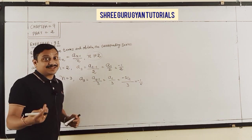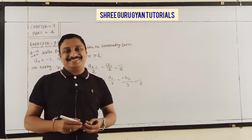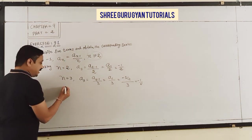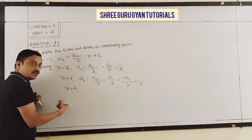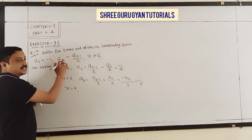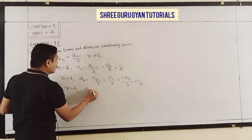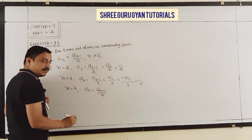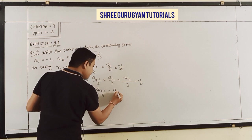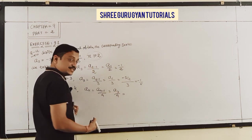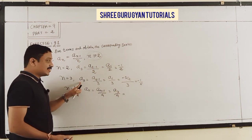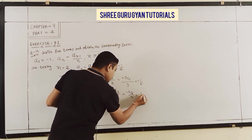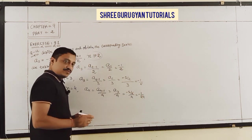Now continue students, n equal to 4: a4 = (4-1)/4 × a3. What is a3? Minus 1 by 6, divided by 4 gives minus 1 by 24.